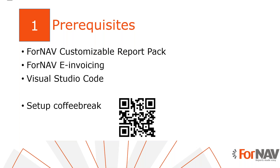Let's start with the first step. Today I will work on a Business Central on-premise server with the Business Central 2024 Wave 1 release. I've installed the ForNav Customizable Report Pack and executed the step-by-step wizard from the assisted setup to get started. I've also installed the ForNav e-invoicing extension — both extensions can be downloaded from the ForNav website or from AppSource. I've also downloaded and set up Visual Studio Code. Everything I do today will work for a cloud environment as well.